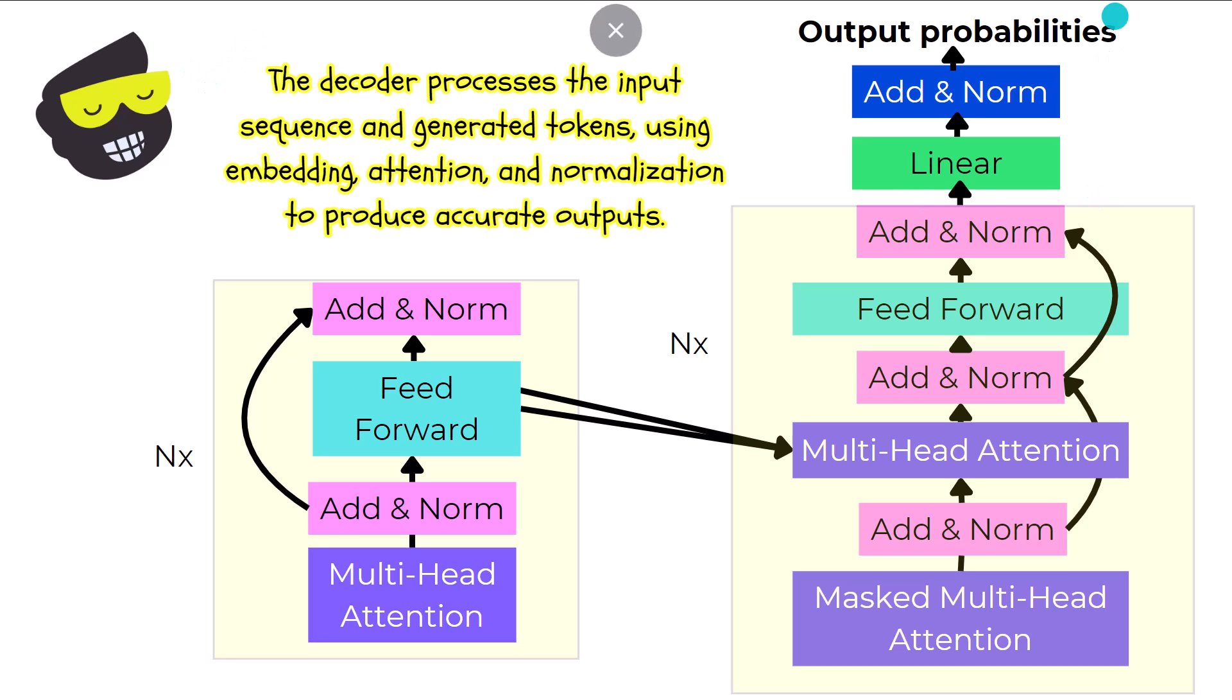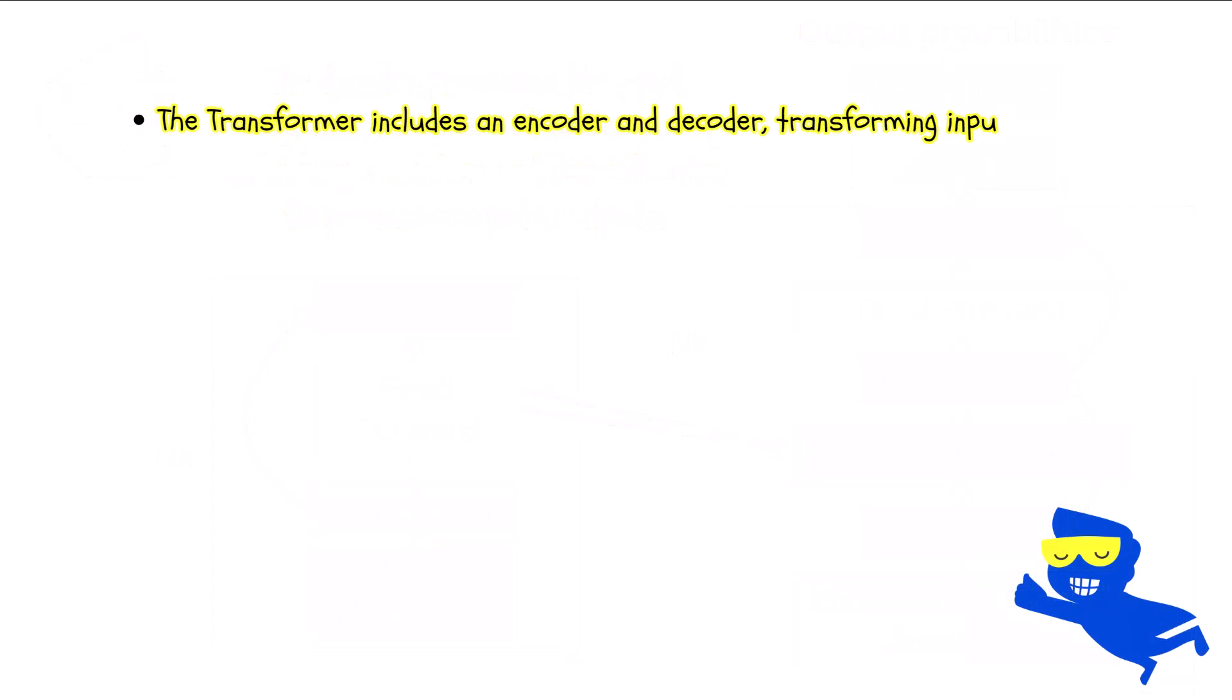And, of course, this will lend to the final prediction. In summary, the transformer architecture is composed of two main parts, the encoder and the decoder. Each consists of several layers that process and refine input data to generate meaningful outputs. The encoder transforms input sequences into detailed representations using input embeddings, positional encoding, multi-head attention, and feedforward networks.